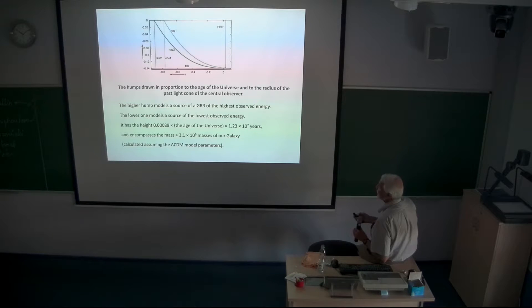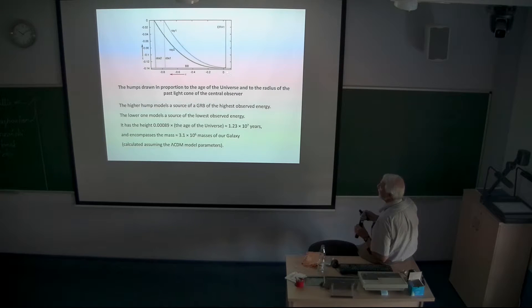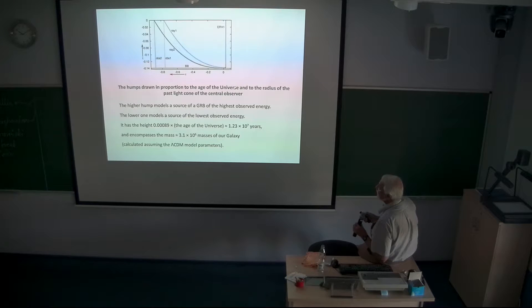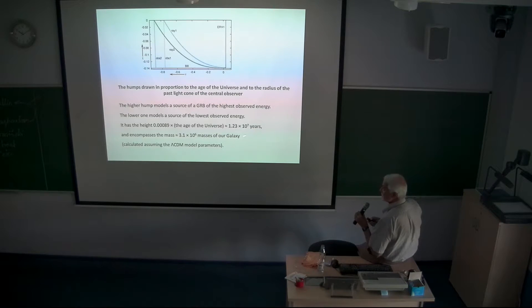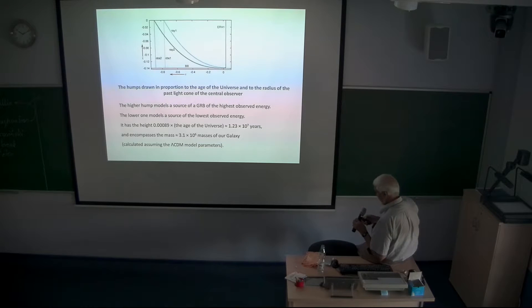Two such humps are drawn in proportion to the age of the universe and to the radius of the past light cone of the central observer. The higher hump models a source of the gamma ray burst of the highest observed energy, and the lower one models a source of the lowest observed energy. The lower one has a height of about one thousandth of the age of the universe and encompasses the mass of about three million times the mass of our galaxy.